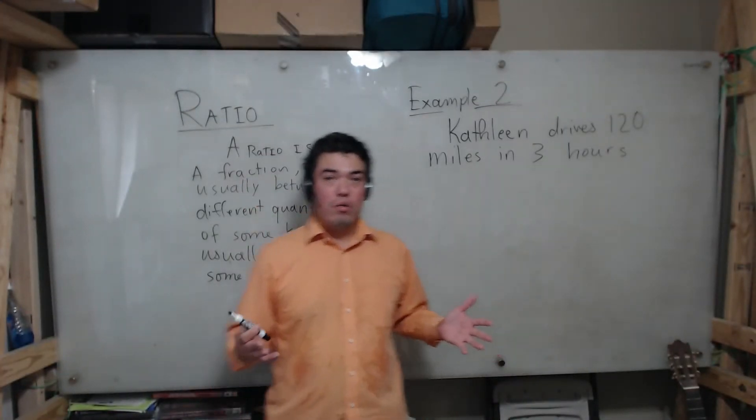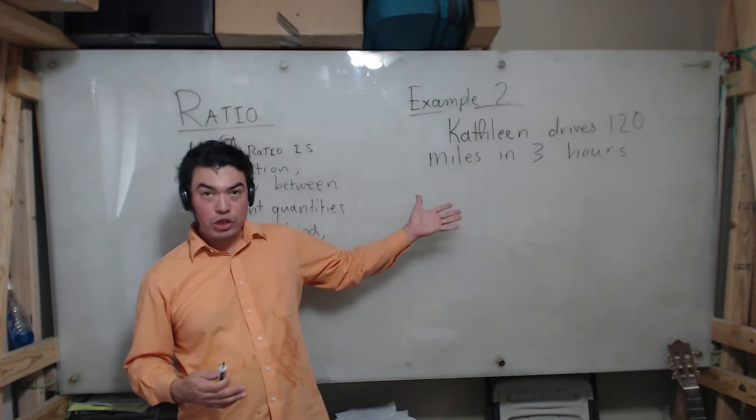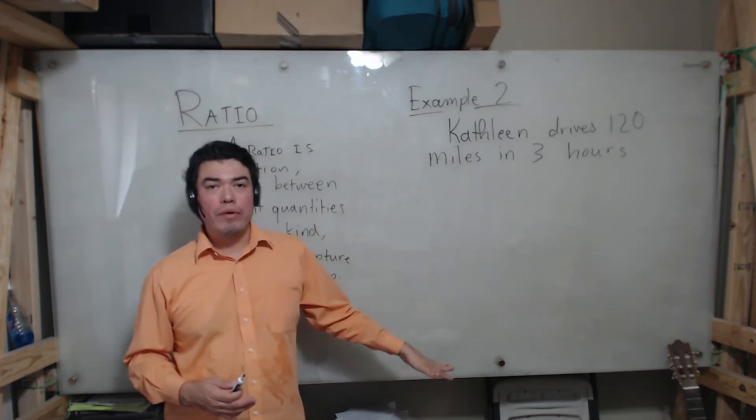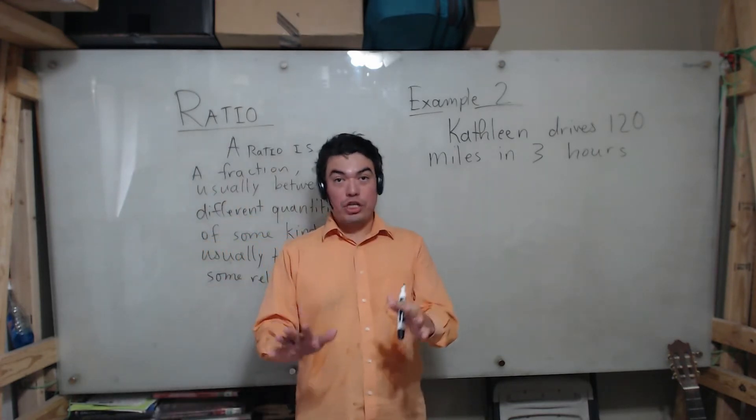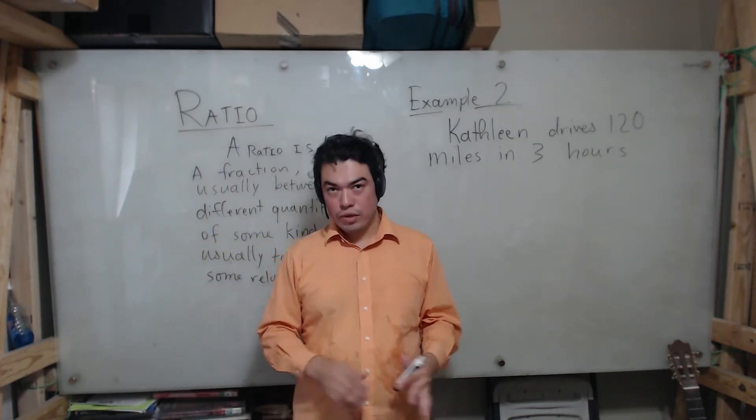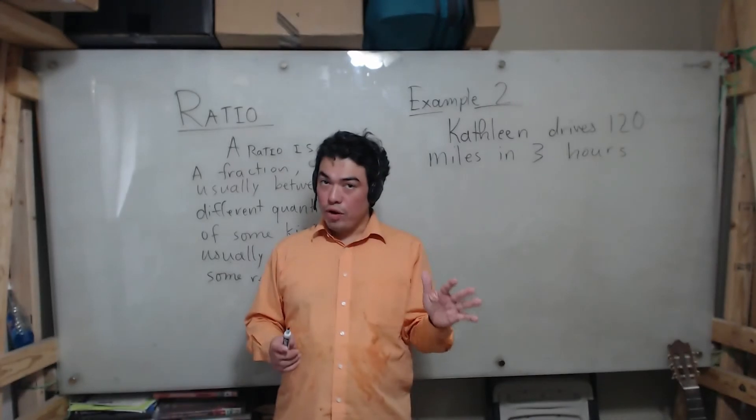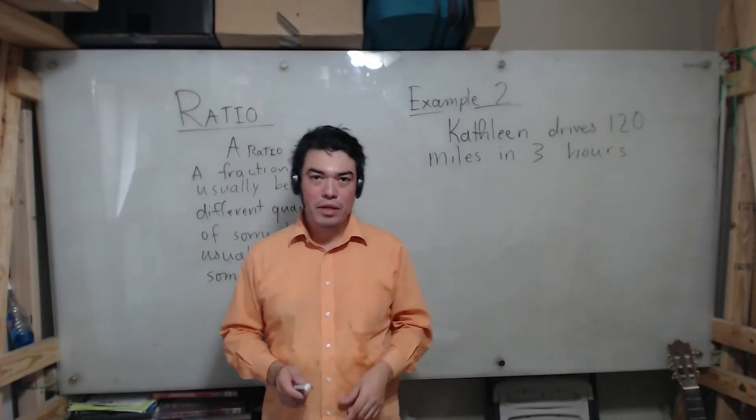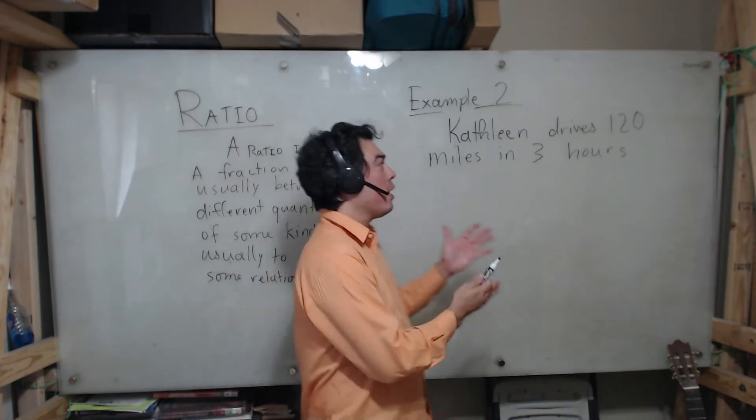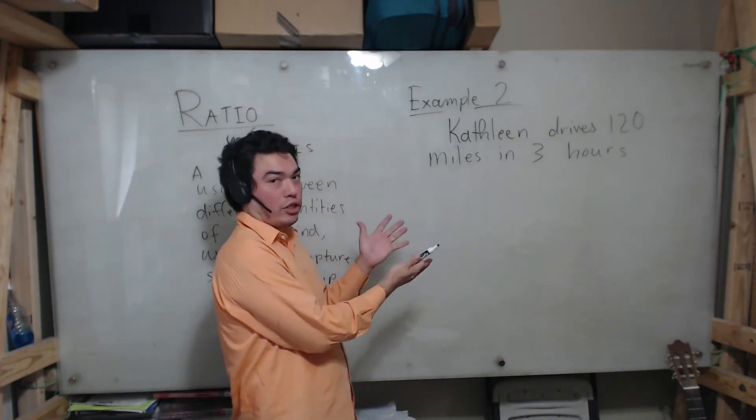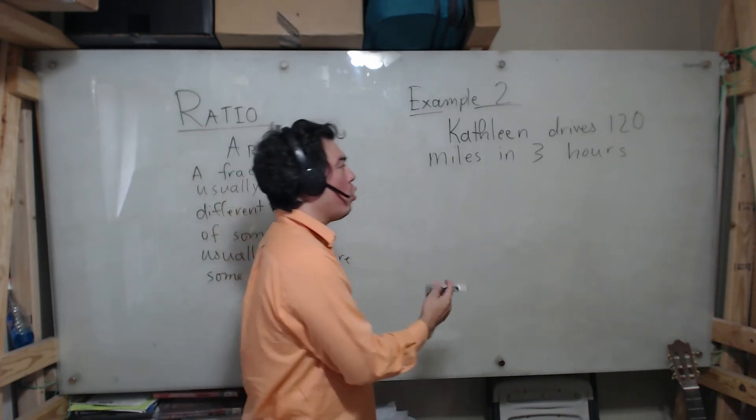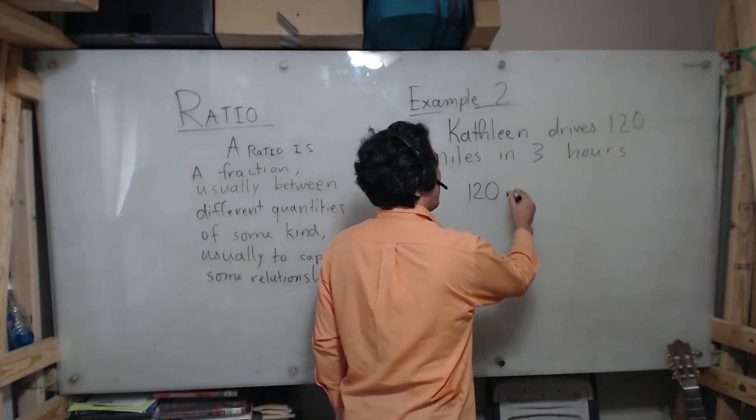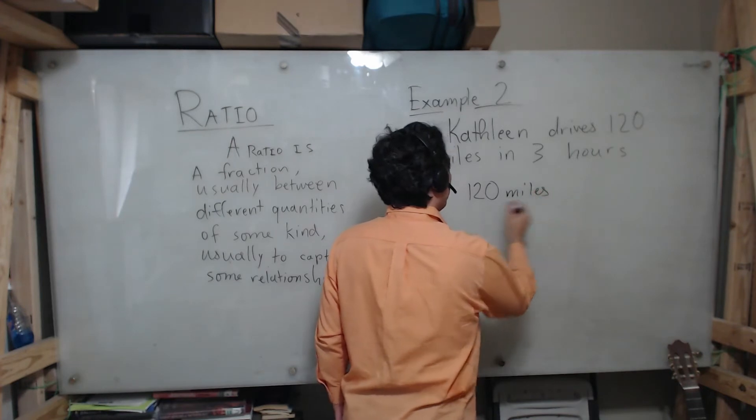Now we're going to move on to example two of ratios. Kathleen drives 120 miles in three hours. I know what you're thinking, she is driving extremely slowly, but you have to respect her for being a law-abiding citizen, just kidding. All joking aside though, even though it doesn't look like a ratio, it is a ratio. We can say that she drives 120 miles for every three hours.